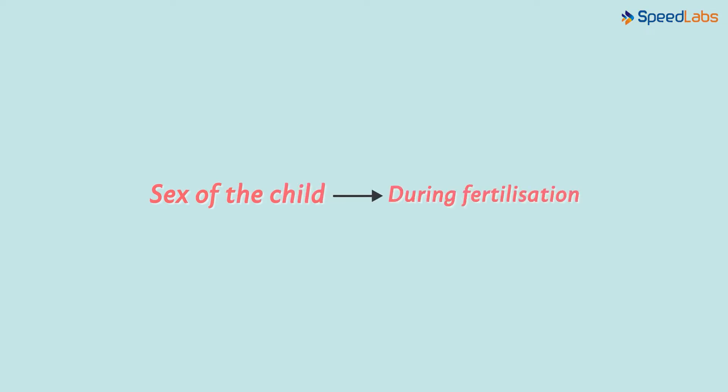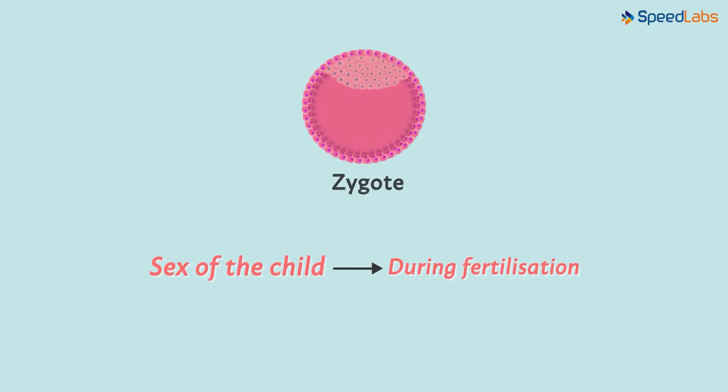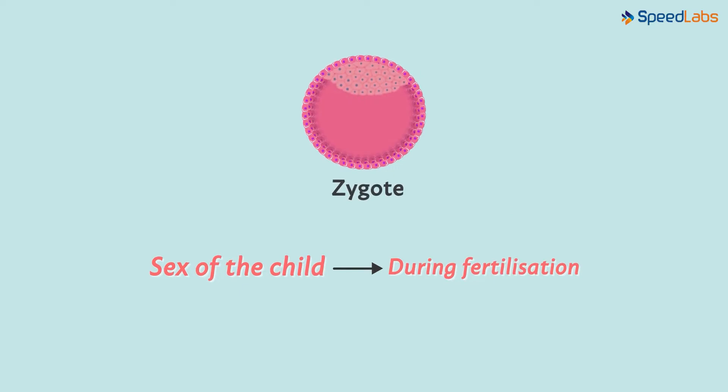The sex of the child is actually decided at the time of fertilization itself. It is just that the zygote and the growing embryo appear exactly the same in the cases of males and females. Why is this so? It is because the embryo is only a mass of cells — it does not have organs developed yet.